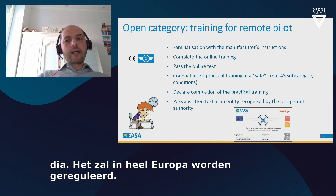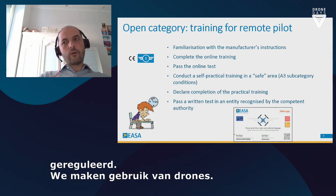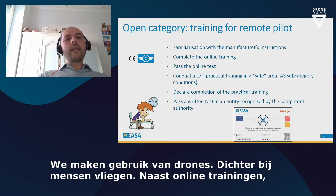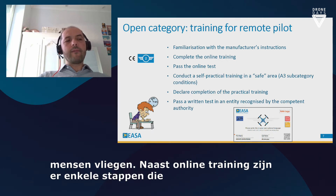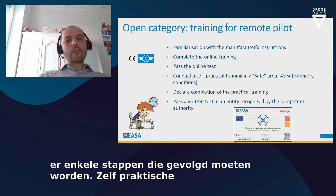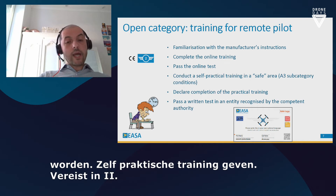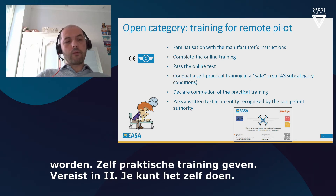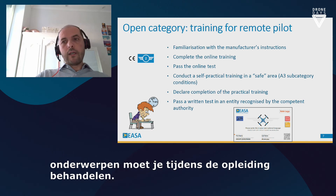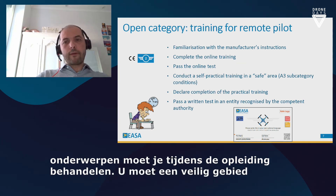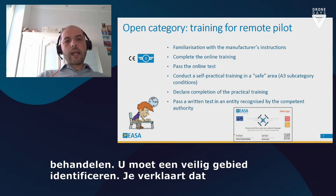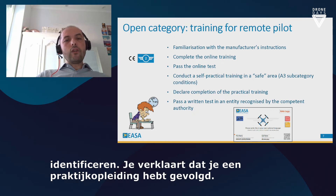For operations using drones with class C2 — when you want to fly closer to people — in addition to the online training there are a few additional steps. The first is to conduct a self-practical training. Practical training is not required for subcategory A1 or A3, but is required for A2, though you can do it yourself. Our Means of Compliance lists the topics you are expected to cover during self-training: identify a safe area far from airports and people, familiarize yourself, then declare that you have completed the practical training, and finally pass a written test at an entity recognized by the Competent Authority.